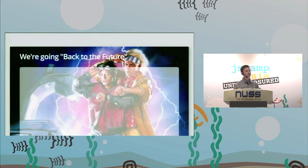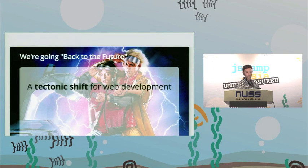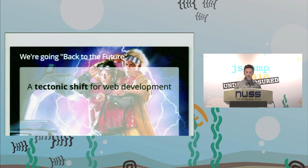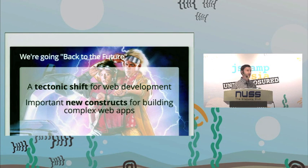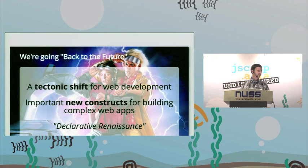This talk is going to bring you back to the future. We're bringing back markup — bringing back DOM as a first-class citizen in web development. It's actually a tectonic shift from what we're doing today with MVC frameworks. With MVC frameworks today you have a bunch of imperative JavaScript APIs. With web components, you're getting away from that and going back to what the web was good at, which is HTML. We're calling this the declarative renaissance — a shift back to DOM and markup.